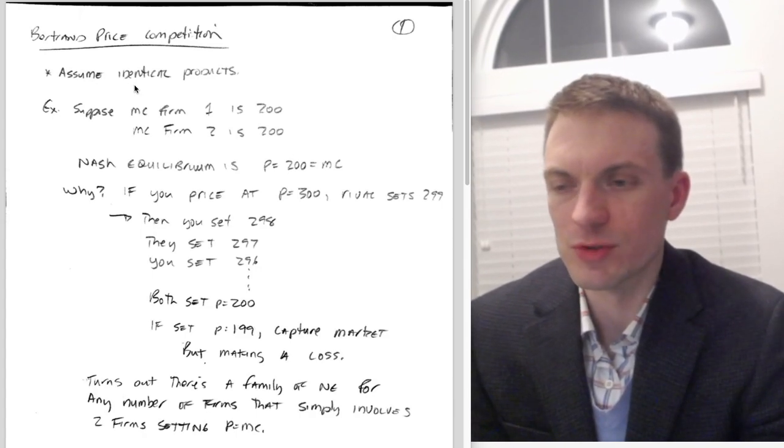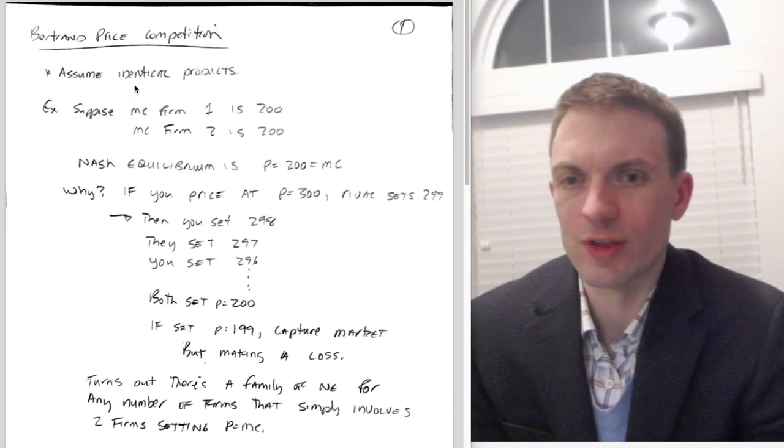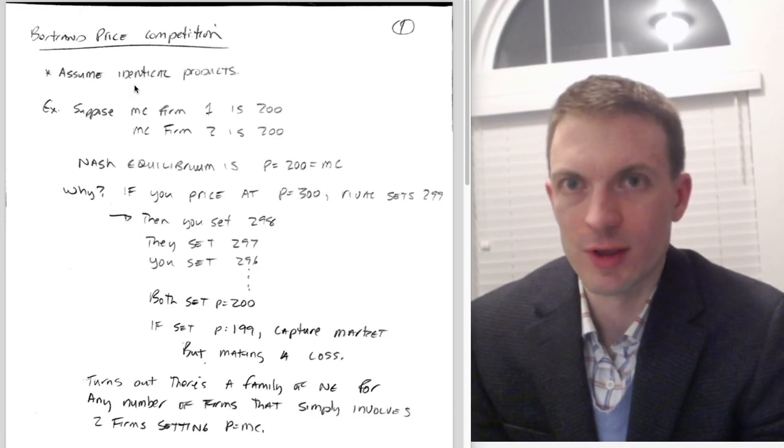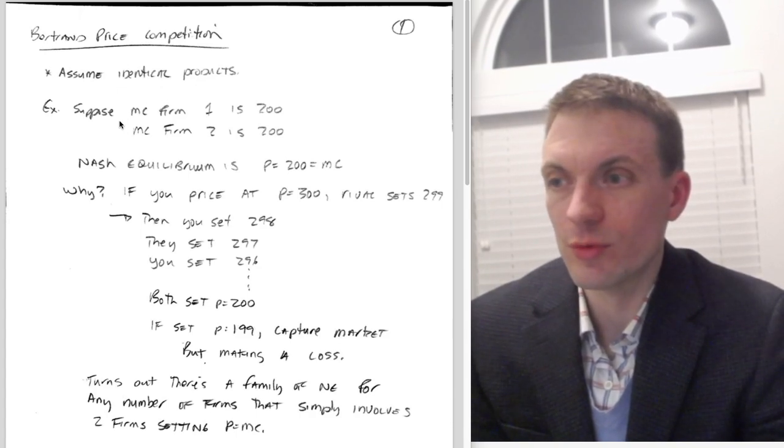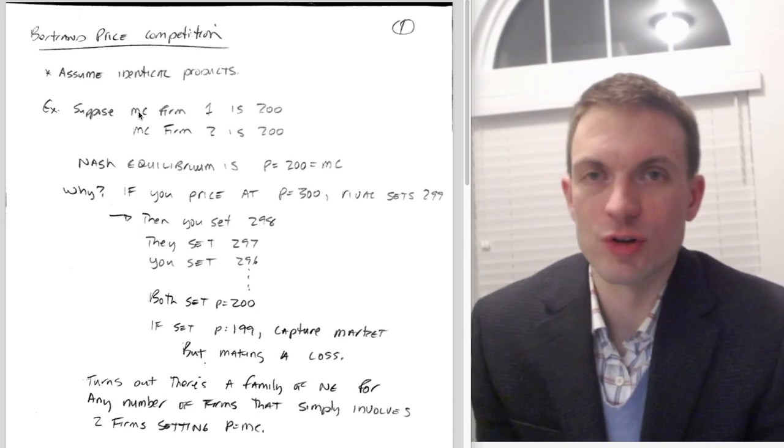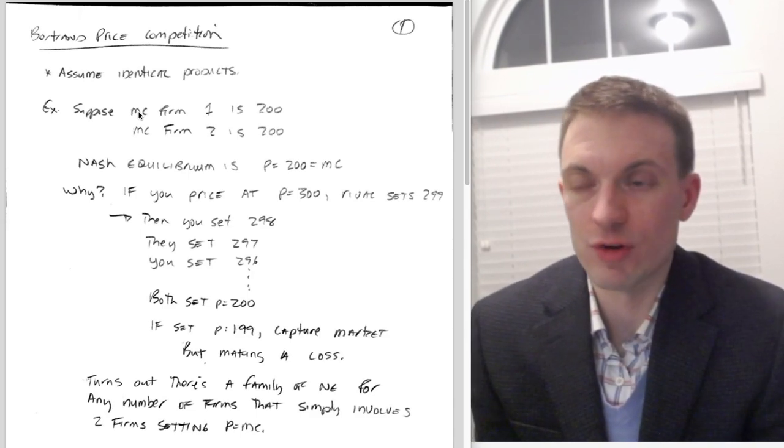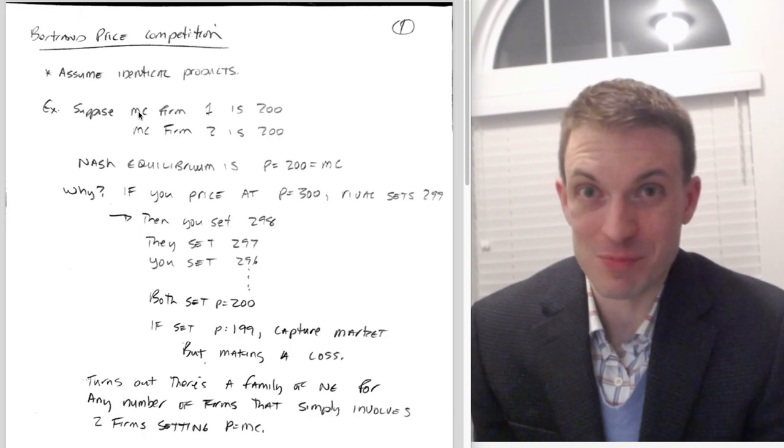If we have product differentiation, it's a different model entirely. The analysis looks a lot like Cournot oligopoly in how you'd set up the problem, except you're setting up the profit function in terms of price rather than quantity. But for identical products Bertrand, assume we have marginal cost curves for two firms—we're thinking of a duopoly. Marginal cost I'll assume is 200 for each firm, and it turns out the Nash equilibrium is going to be set price equal to marginal cost, set price equal to 200.